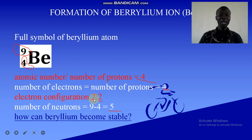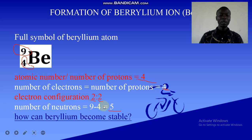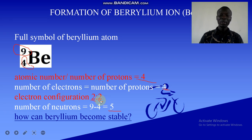The first energy level should carry a maximum of only two electrons. This atom is not stable, so it has to gain stability by losing these two electrons or gaining six electrons to make eight. But it is easier to lose the two electrons.